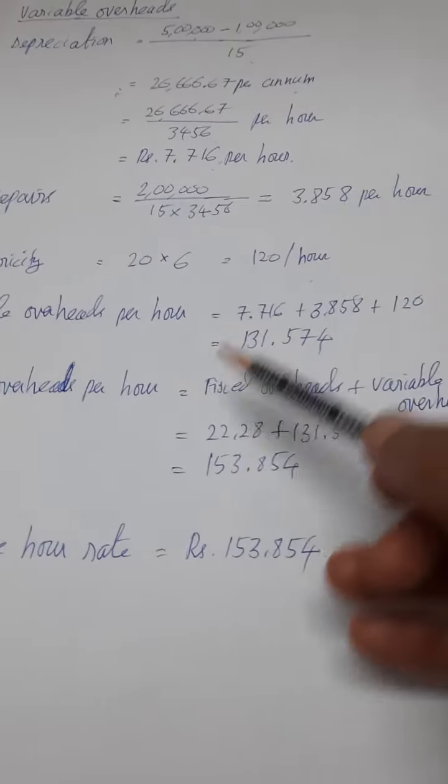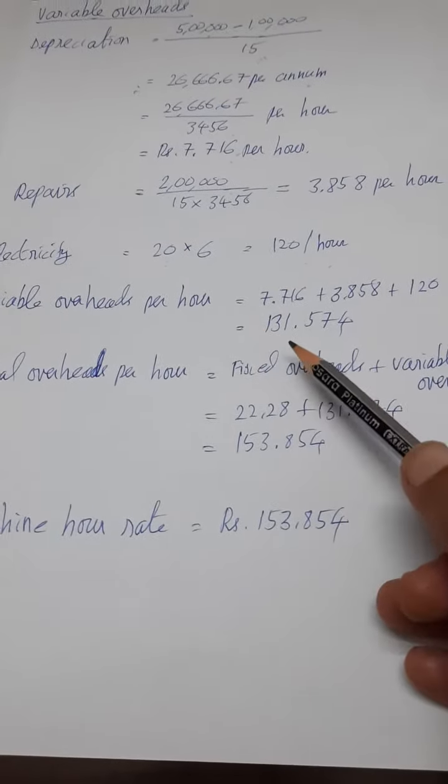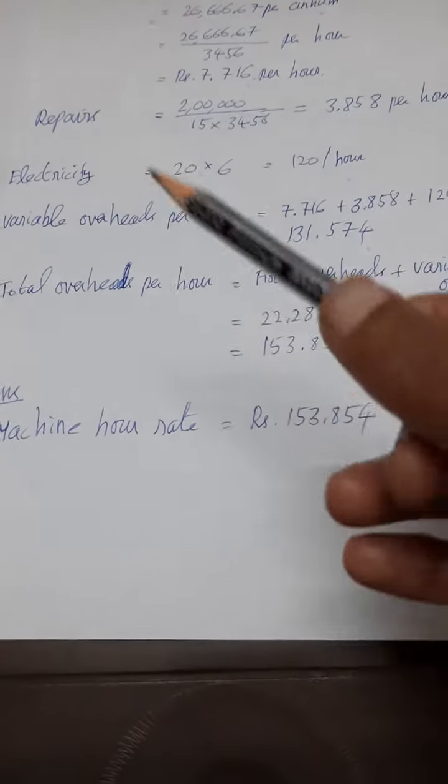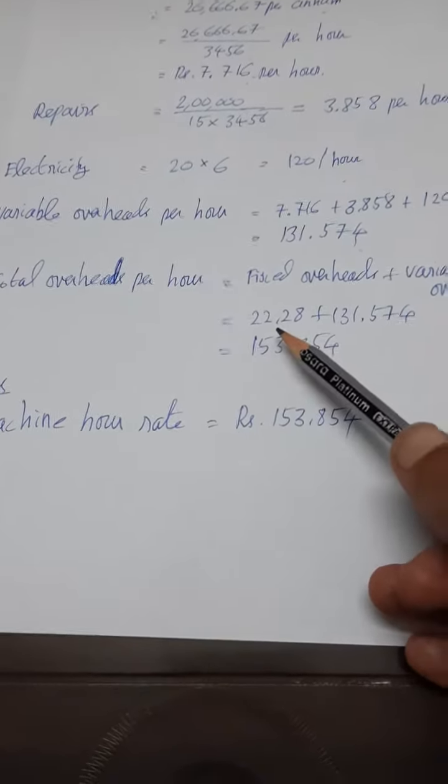When you add everything you are getting the variable overhead as 131.574 rupees. Initially we have found out the fixed overhead as 22.28.